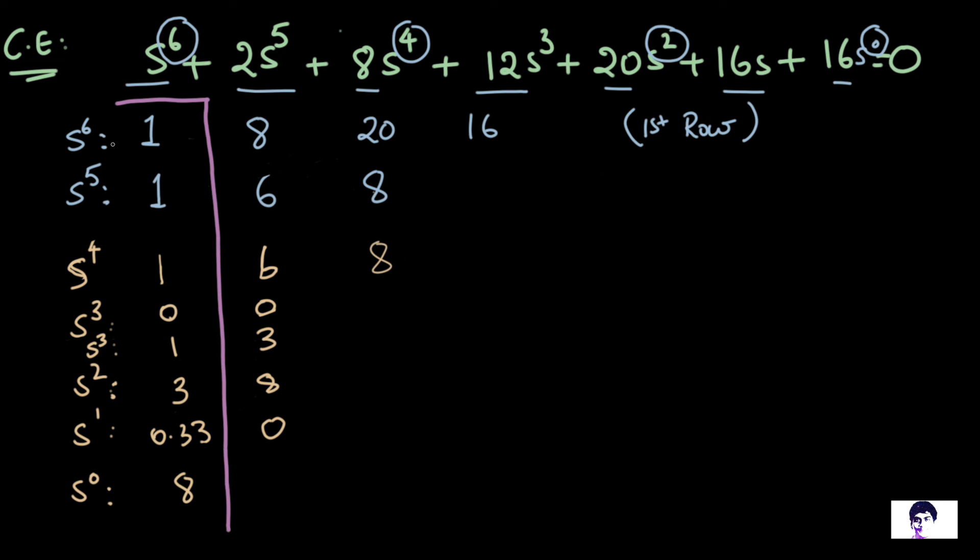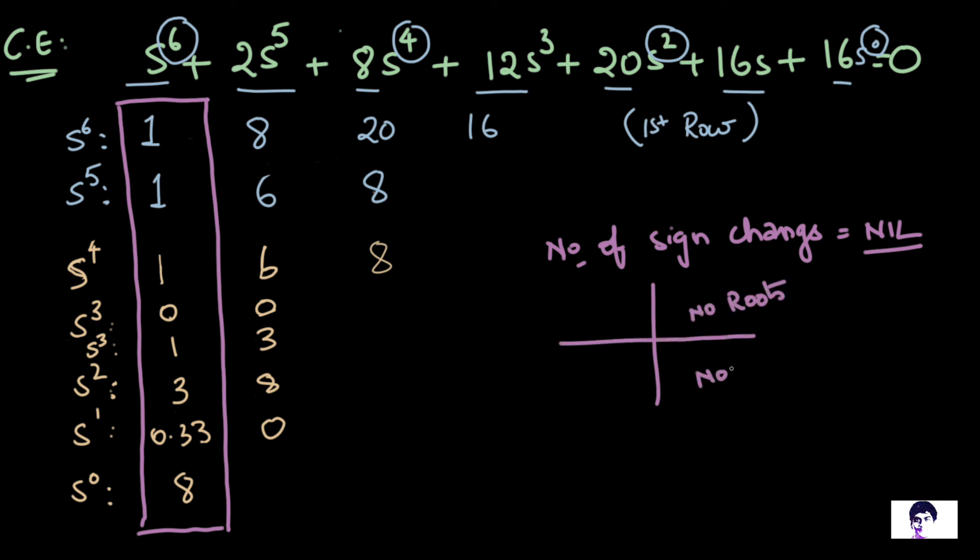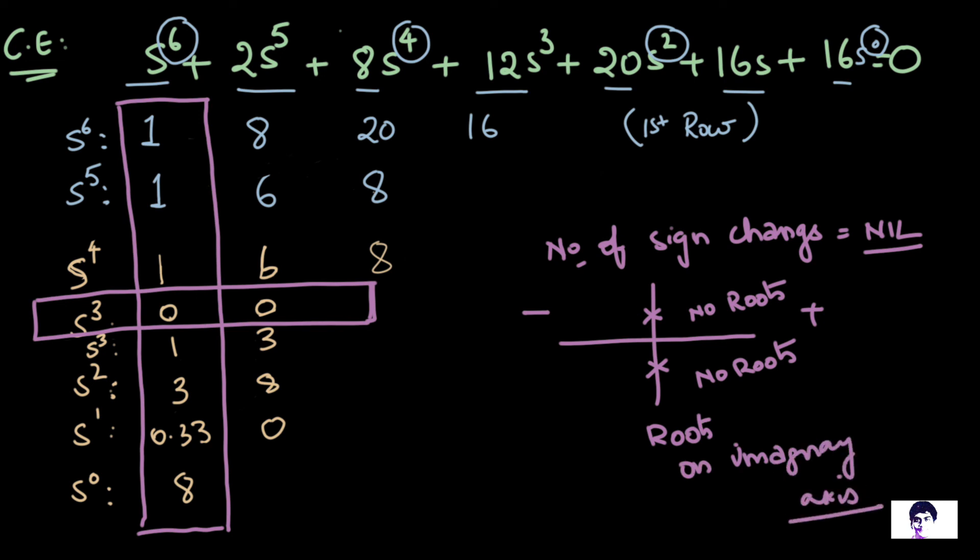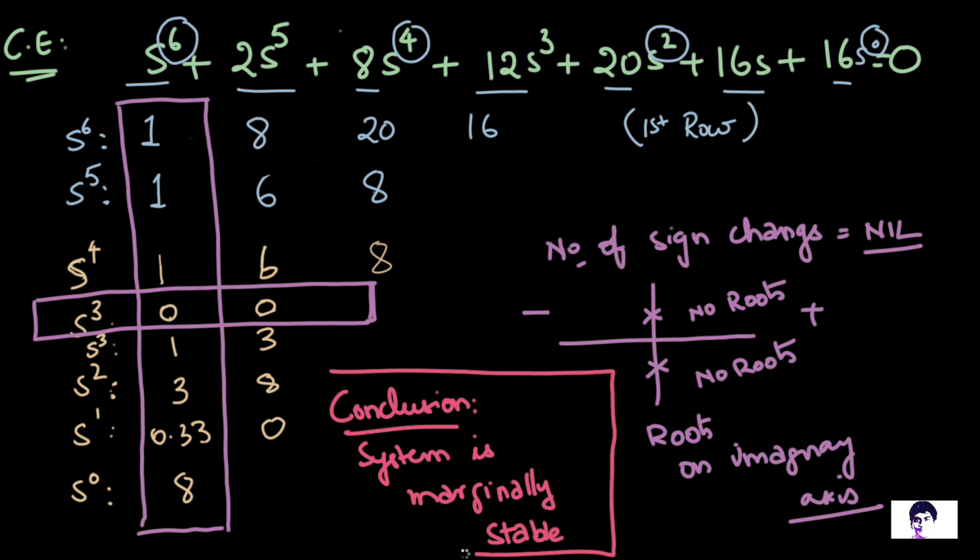Let us take a look at all the elements in the first column of our array. We notice that there are no sign changes from the first element to the last element of the column, which means that there are no roots for this characteristic equation that are lying in the positive half of the S-plane. But we notice that there is a complete row of zeros, which means that there are roots lying on the imaginary axis. And what do we conclude when there are roots on the imaginary axis? We mention that the system is marginally stable or the system has limited stability.